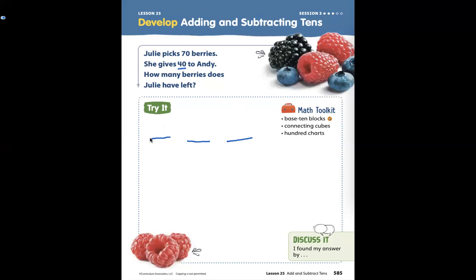Let's do that again. Julie picks 70 berries. She gives 40 berries to Andy. How many does she have left? This time when we think about it, we're going to fill in the numbers that we hear in those places. Julie picks 70 berries, she gives 40 to Andy. How many does she have left? So this is our mystery, this is what we're looking for right here.